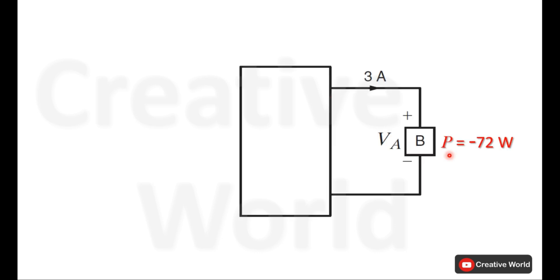So let's solve this scenario. We know that if any element is supplying power, its power will be indicated with a minus sign. So in our case, element B is supplying 72 watts, so its power will be taken with a minus sign.